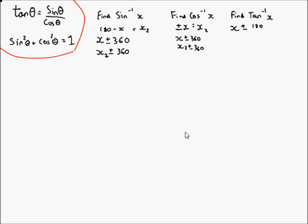Say you have sine of x equals y. To find x, you just do sine inverse of y. Once you have x, there's more than one answer for sine — you have 180 minus the answer equals x2. Then you have your original answer plus or minus multiples of 360 if needed.